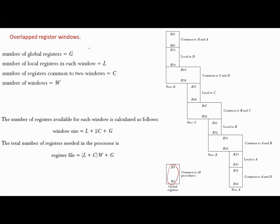In our example, the global registers are 10, the local registers are also 10, the number of registers common to two windows is 6, and the number of windows is 4. The window size equals 10 plus 2 times 6 plus 10, which is 32 registers. And the register file equals 10 plus 6 multiplied by 4 plus 10, which is 74 registers.